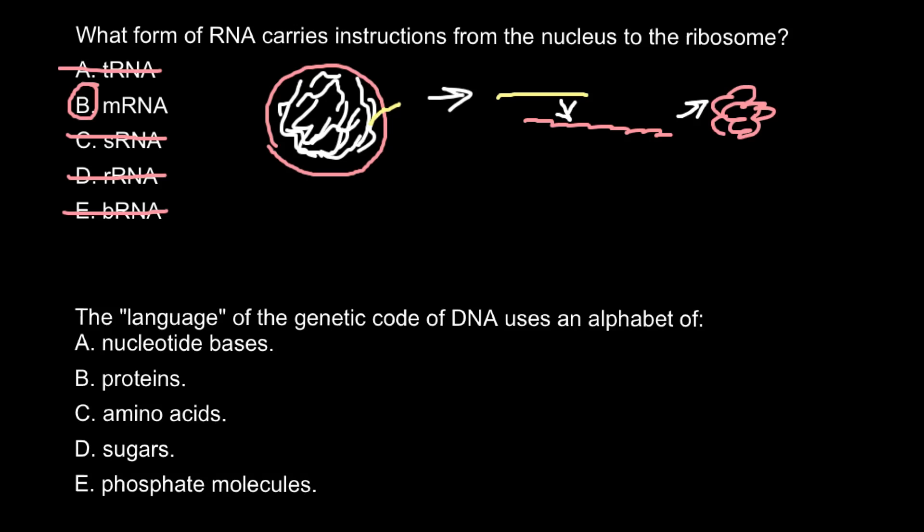In organisms such as bacteria, there is no nucleus, so messenger RNA would be simultaneously transcribed and translated because there is no nucleus. All the chromosomes just float freely in the cytosol.